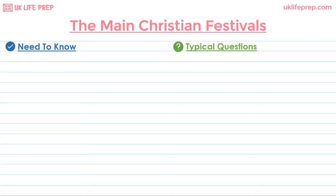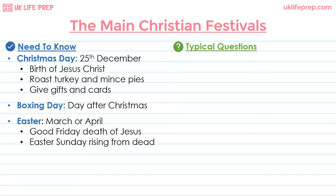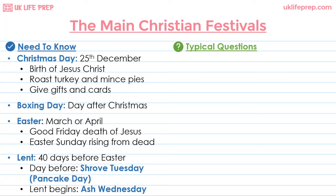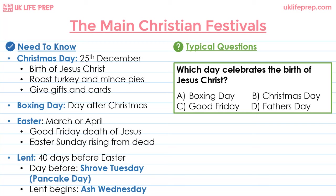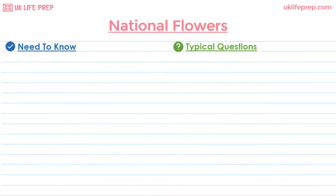An important part of British life is knowing the main holidays. Christmas Day, which marks the birth of Jesus Christ, is on the 25th of December, celebrated by families getting together for a festive meal of roast turkey and mince pies and exchanging gifts and cards. Boxing Day is the day after Christmas and is a public holiday with no religious significance. Easter, celebrated in March or April, marks the death of Jesus on Good Friday, and Easter Sunday marks his rising from the dead. Lent is the 40 days before Easter, beginning on Ash Wednesday. The day before Lent begins is Shrove Tuesday, also known as Pancake Day.